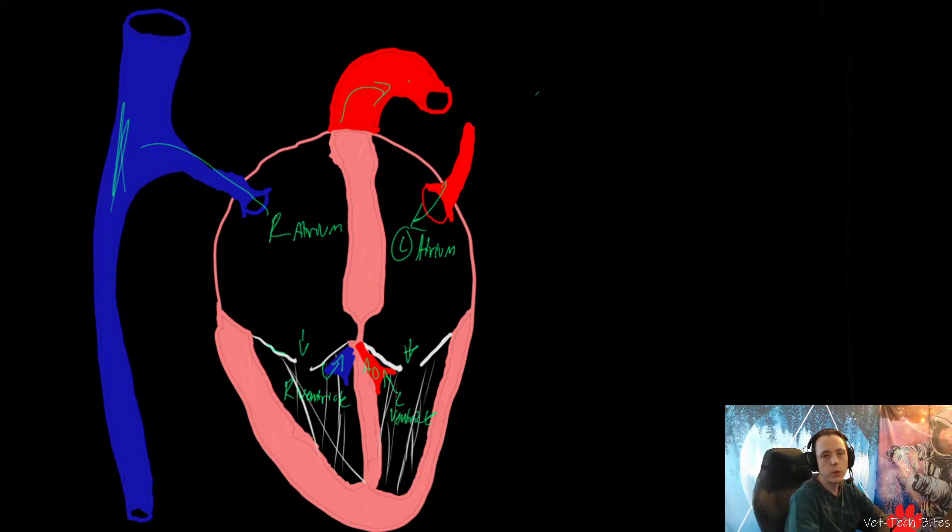A couple other things to note about the anatomy: this right here is going to be the interatrial septum. Down here, this is going to be our interventricular septum between both ventricles, just like the other one was between the two atria. And this big meaty section right here is known as the myocardium, the heart muscle, the thing that actually makes it pump.